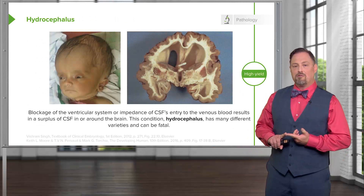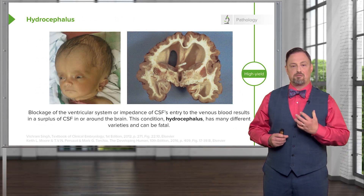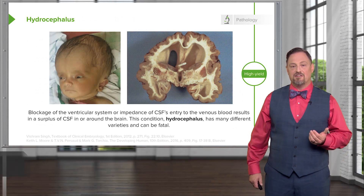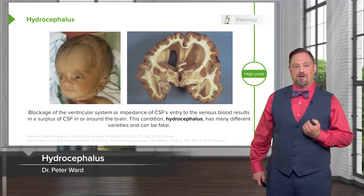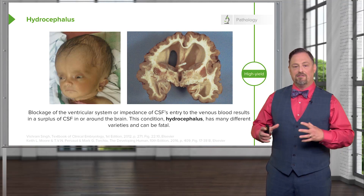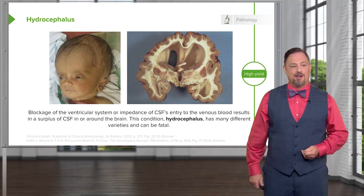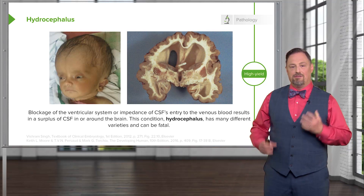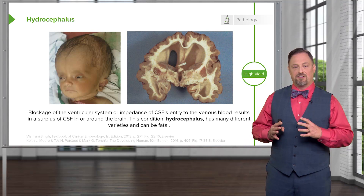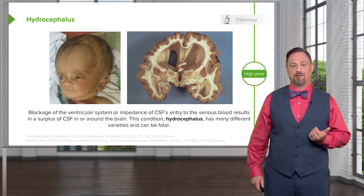What can go wrong in this process? If drainage of the ventricular system is interrupted, we can develop conditions called hydrocephaly or hydrocephalus. Blockage of the ventricular system can cause swelling of the ventricles or pressure on the brain. In adults, the brain is surrounded by a solid skull, so that pressure compresses the brain — this is a medical emergency.